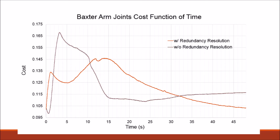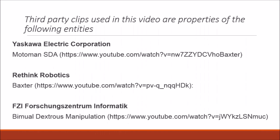Lastly, these are the cost function plots for Baxter's arm movement. The cost function magnitude describes how close the joints are to their geometric limits. With redundancy resolution, spikes in the cost function are avoided. Thank you for watching this video.